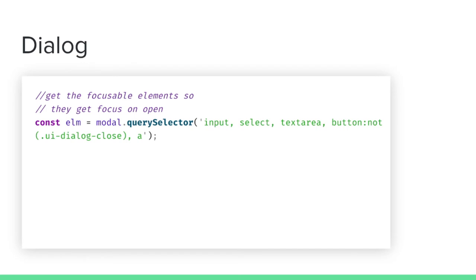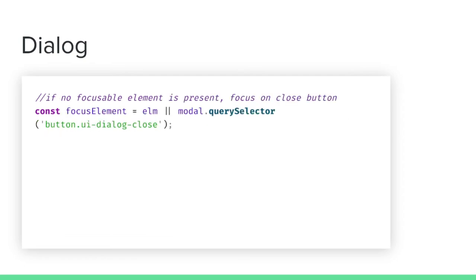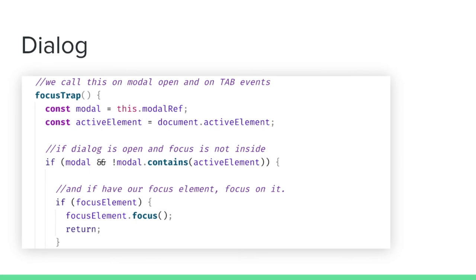Here, what we are doing is querying for any interactive element which can have focus — input, select, textarea — and we are saying don't select the close button. So as soon as the dialog opens, it will look for any input field or any button and focus on that. If we don't have any such element, then we select the close button for the dialog. And this focus trap code simply says: if our modal is open and the focus is not inside the modal, then focus on the element we have previously queried — it can either be any interactive element or the close button.